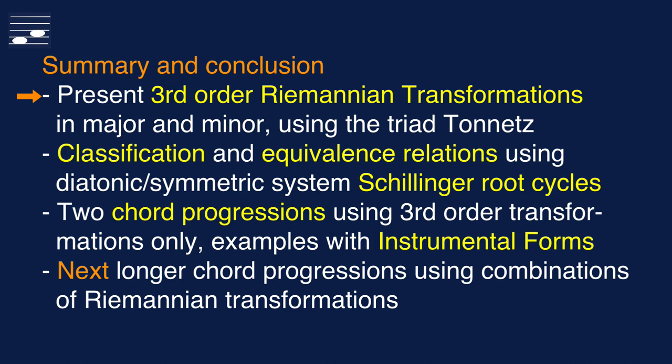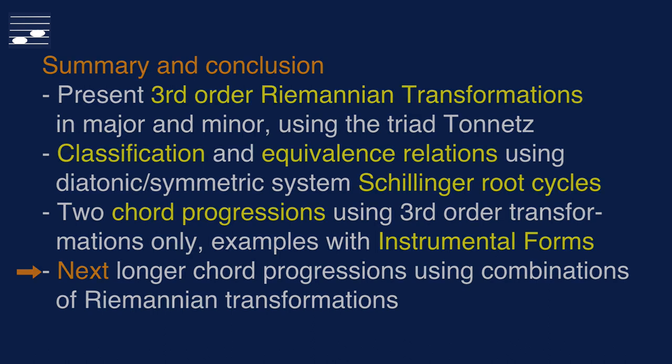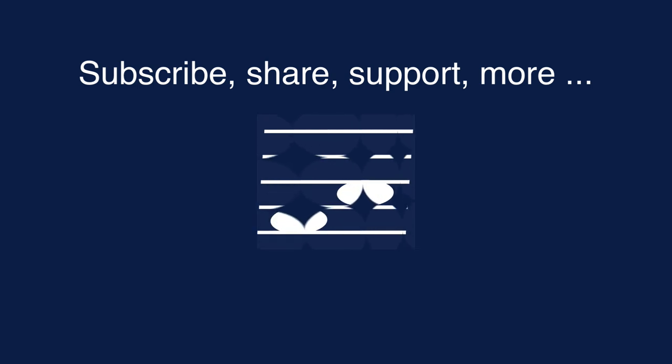In episode 3 of this series, the focus was on third-order compound Riemannian transformations. I presented all options in major and minor, depicting triad paths in the Tonetz diagram, along with the characteristics of these transformations, a classification based on the Schillinger diatonic and symmetric root system, and the equivalence relations between transformations in major and minor. We discussed two chord progressions using third-order transformations exclusively and saw how these were developed into short composition examples using instrumental form techniques. The next episode will demonstrate the application of various combinations of basic and compound Riemannian transformations in somewhat longer chord progressions and composition examples.